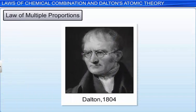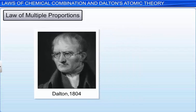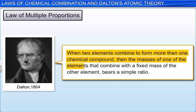In 1804, Dalton proposed the law of multiple proportions. This law states that when two elements combine to form more than one chemical compound, then the masses of one of the elements that combine with the fixed mass of the other element bears a simple ratio.